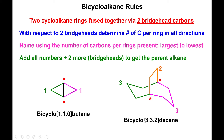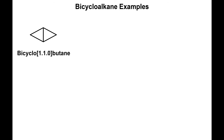Let's look at a few more examples, starting with simpler ones that don't have additional carbons above the bridge heads. For the next molecule in the series, we have a triangular shape to the left and a square shape to the right. The bridge heads are represented by the carbon at the bottom and the carbon on top. So this is a bicyclo structure: one carbon to the left, two carbons to the right, zero above — making it a 2.1.0 structure. Adding two plus one plus zero gives three, plus two more is five: this is bicyclopentane.